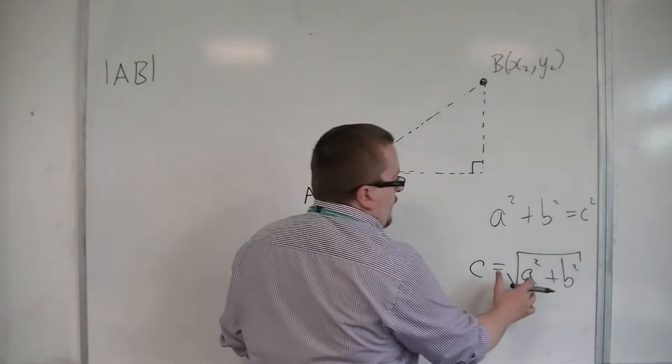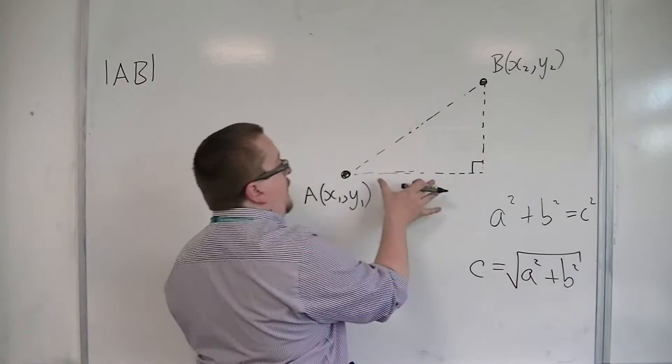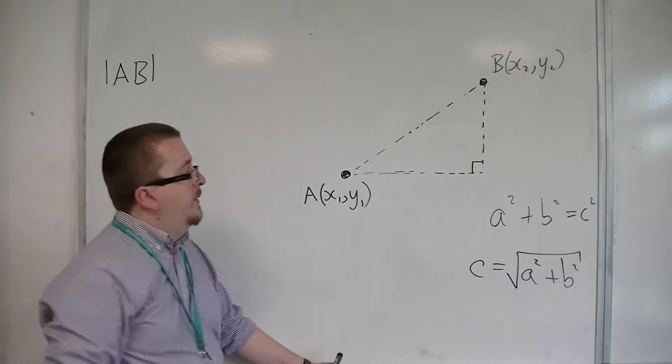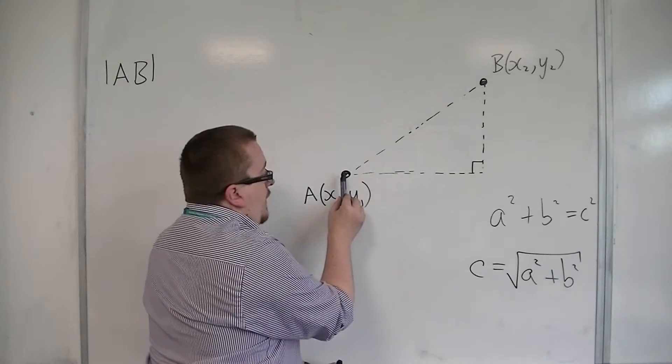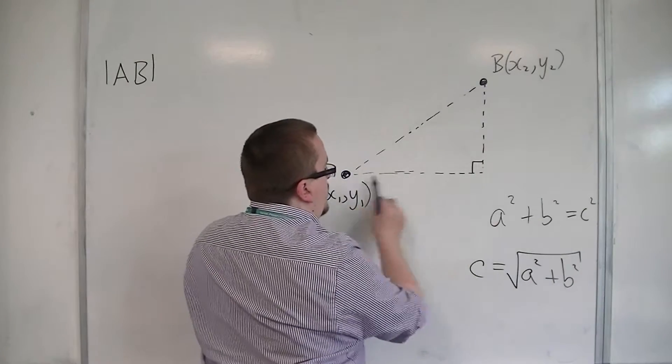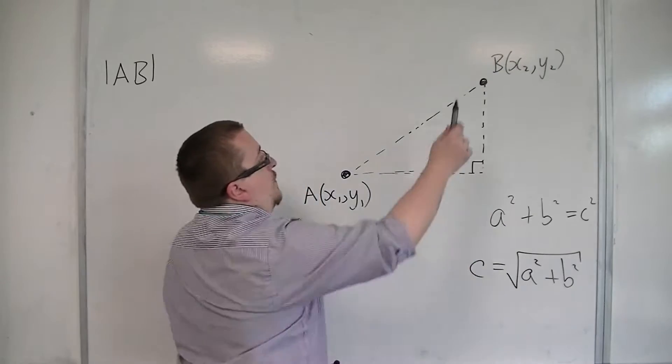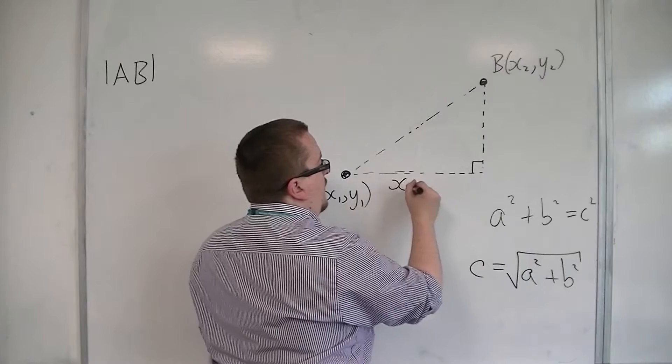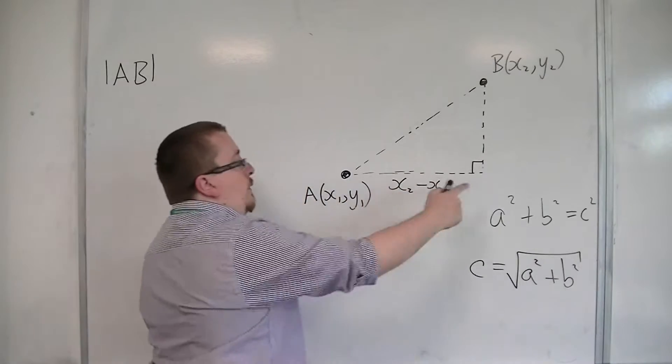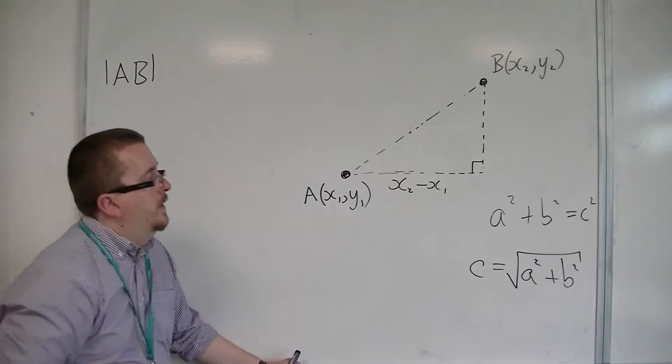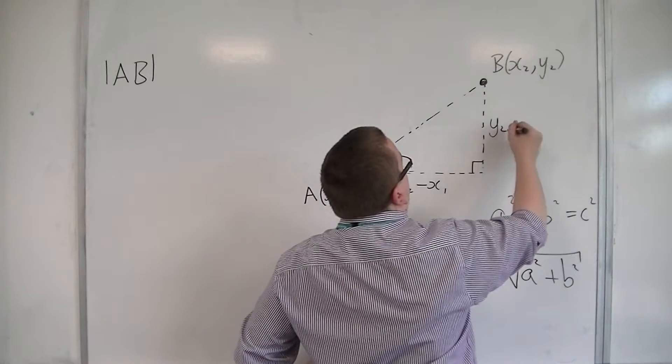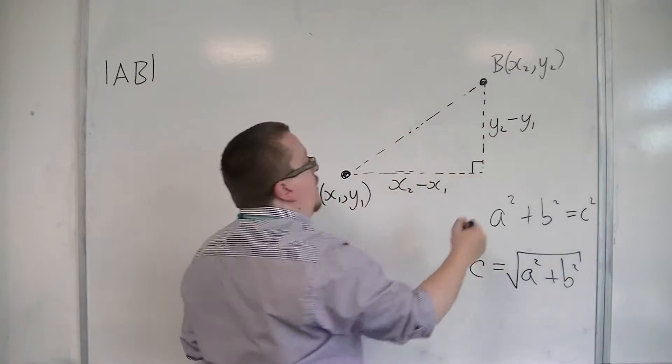We just need to find a way of writing down the lengths of A and B. So the length of the base is the difference in the x-coordinates of these two points. So this is x2, this is x1, and so the difference is x2 minus x1. That will give me that length. The vertical height can be done in the same way, and will be y2 minus y1.